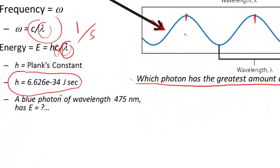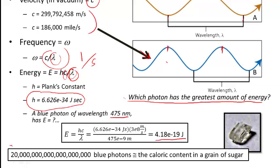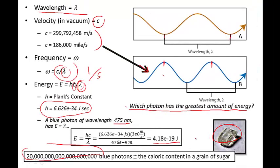Let's calculate the energy of a blue photon at 475 nanometers. Energy equals Planck constant times speed of light divided by the wavelength, and we get a very small amount of energy, 4.18 times 10 to the minus 19 joules, which is nearly nothing. It would take that many blue photons to equal the caloric content of a grain of sugar. Not a lot, but fortunately we're typically working with a great number of photons.